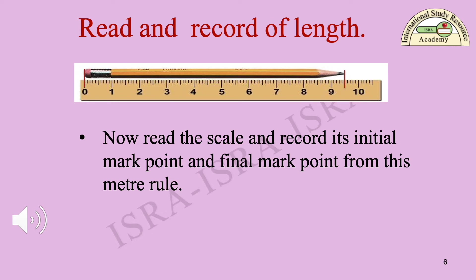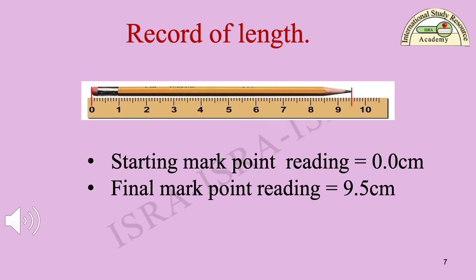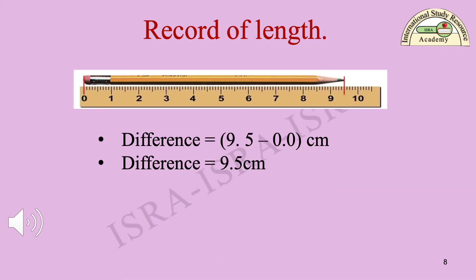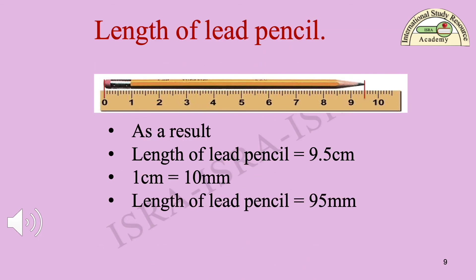The starting mark point reading is equal to 0.0 centimeters. The final mark point reading is equal to 9.5 centimeters. The difference of the two values is 9.5 minus 0.0 centimeters, therefore the difference is equal to 9.5 centimeters. As a result, the length of the lead pencil is equal to 9.5 centimeters.